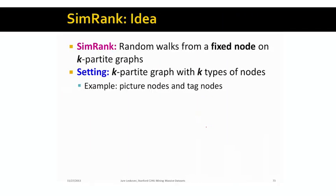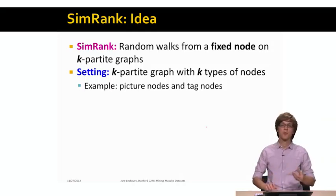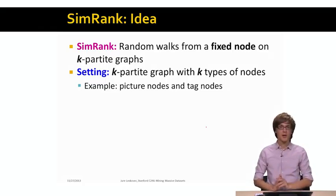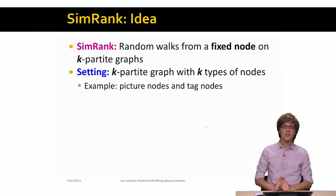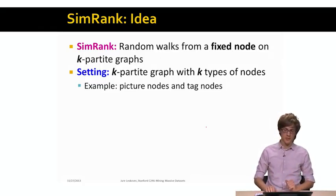And as it turns out, a good way to measure proximities in a graph is a method called SimRank. SimRank is basically a random walk with restarts from a single fixed node. What is interesting is that SimRank was initially proposed where we have k-partite graphs. The idea is that we have different types of entities, k different types of entities. And now we create a k-partite graph where basically entities of one type are linking only to the entities of another type.